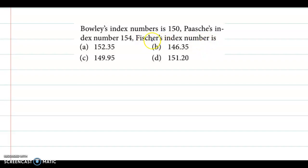Now we know that if we calculate Fisher's index number, then Fisher's index is given by root of Laspeyres into Paasche's index. Now we know the Paasche's index number, but we have to find Laspeyres index. And we can find that with the help of Bowley's index number.